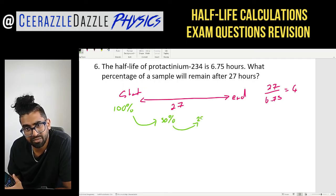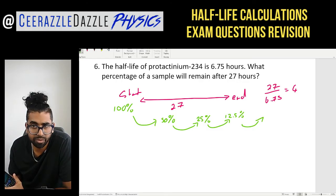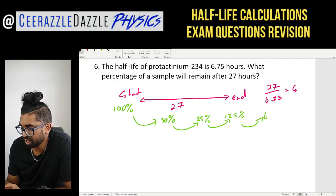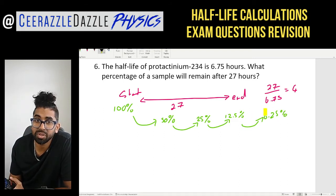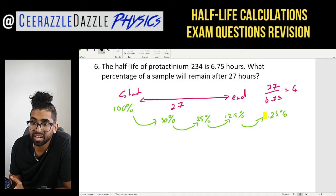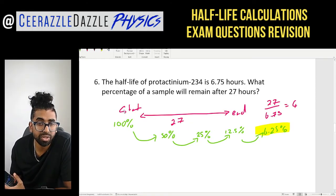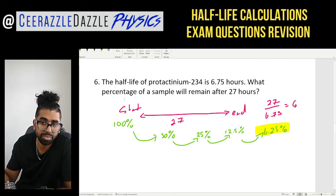Four half-lives have passed. Starting at 100%: first half-life gives 50%, second 25%, third 12.5%, and after four half-lives we get 6.25%. The answer is 6.25%. This question asked about percentage, so the initial amount was taken as 100% and halved four times.